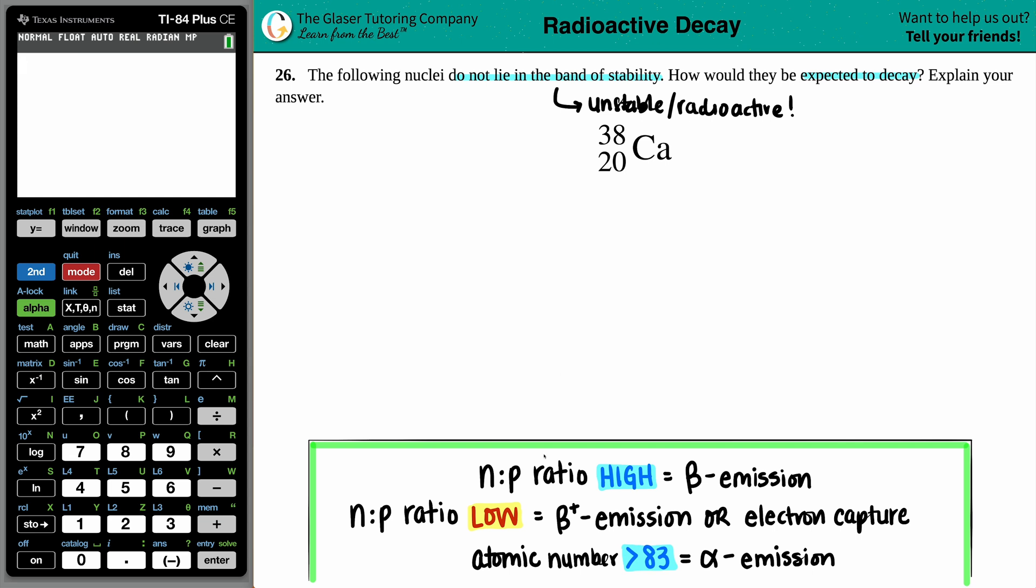Now, there's something called N to P ratios, whether you have a high N to P ratio or a low N to P ratio. Seems like that's the trick, right? We just got to know whether this ratio is high or low. Now, if you want to run through the actual ratio, we would have to find out the actual number of neutrons, that stands for the N, and protons, that stands for the P.